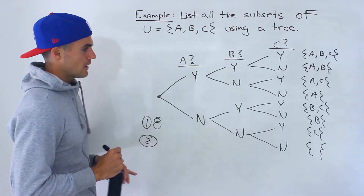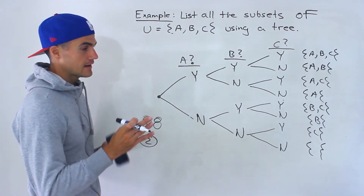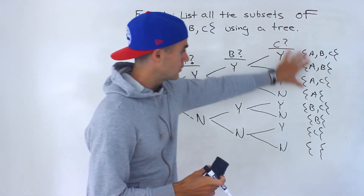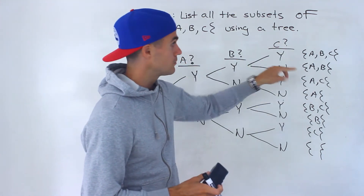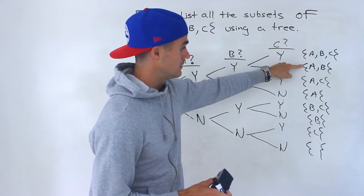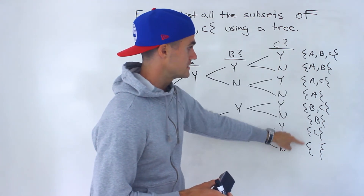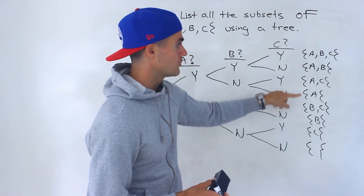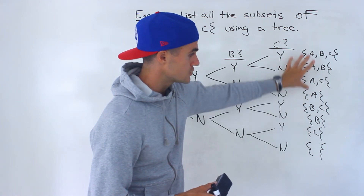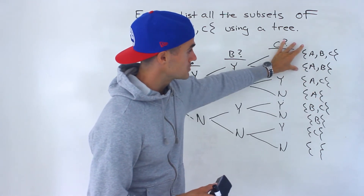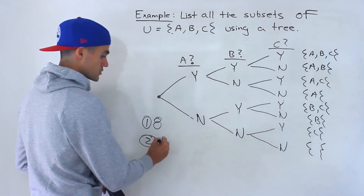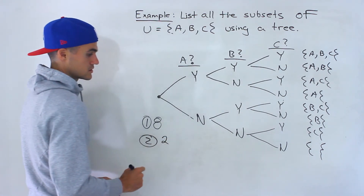Number two asks how many subsets contain both A and B. Going through the list, this subset and this one both contain A and B. No other subsets contain both of them — some contain A individually, some contain B individually, but only two contain both. So the answer to number two is two.